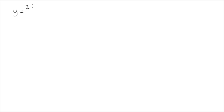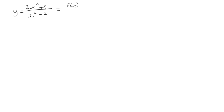In this video I'm looking at sketching the function y equals 2x squared plus 3, all over x squared take 4. This is a rational function because it has a numerator and a denominator that are two different functions. We tend to label these as p and q so that we can refer to them later.